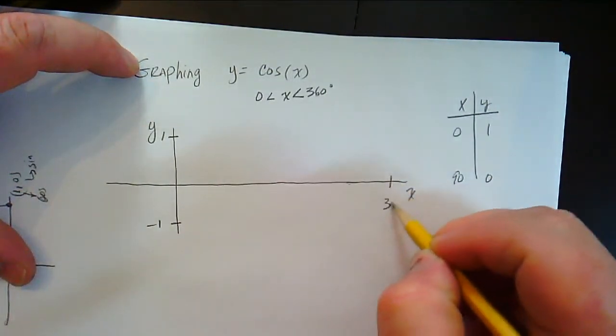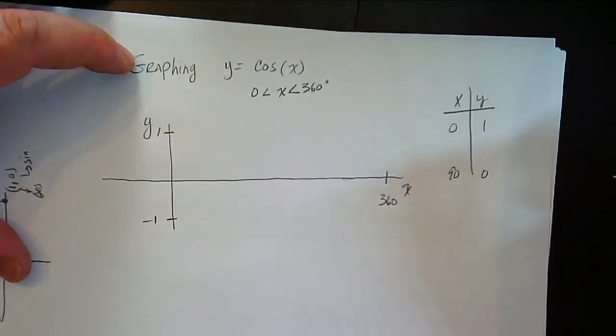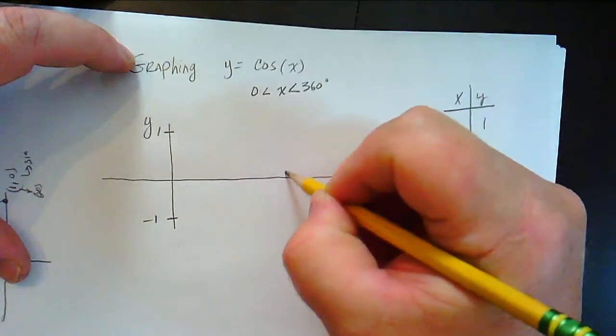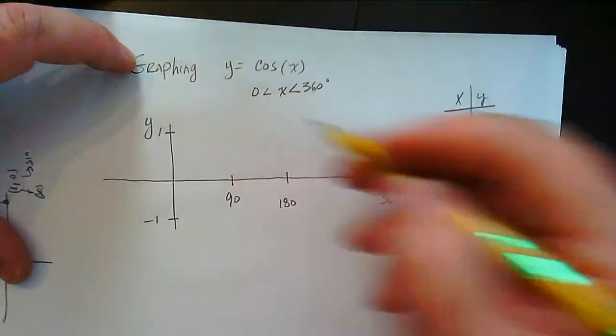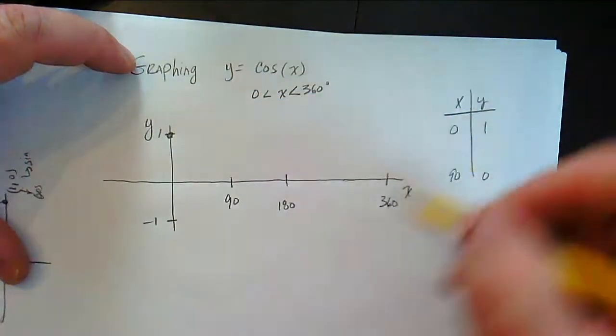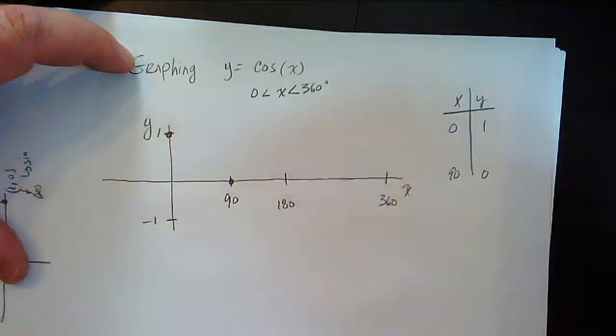We're going to say this is 360 degrees right there. And so if that's 360, this would be 180, that's half way, and this would be 90. So you see we start at 0, 1 right here for cosine and we're going to have 1 x intercept right there.